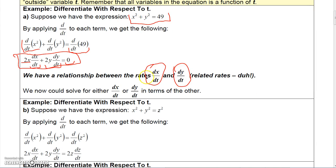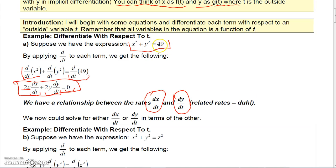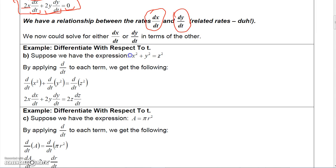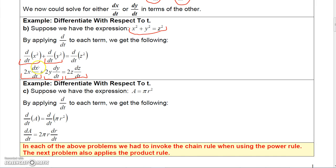Now let's look at another example. The difference from the previous one is that instead of a constant on the right side, what if we had another variable like z²? When we apply the d/dt operator, we differentiate x² and y² just as before — getting 2x·(dx/dt) and 2y·(dy/dt) — and the z² term gives us 2z·(dz/dt). Now we have three rates related: dx/dt, dy/dt, and dz/dt.